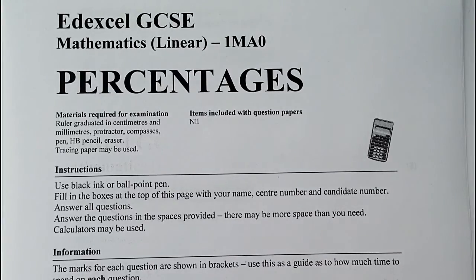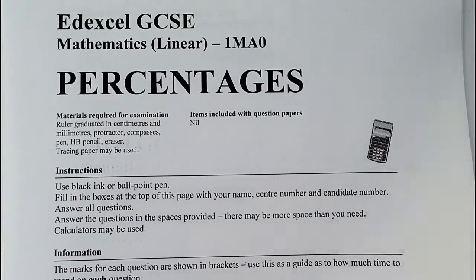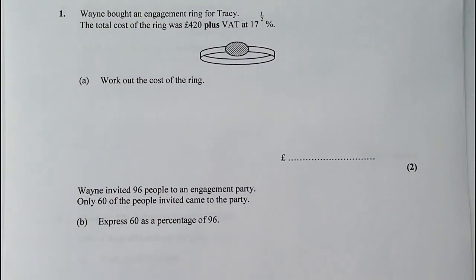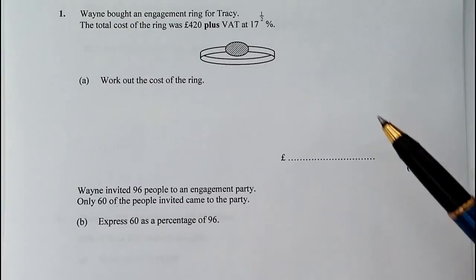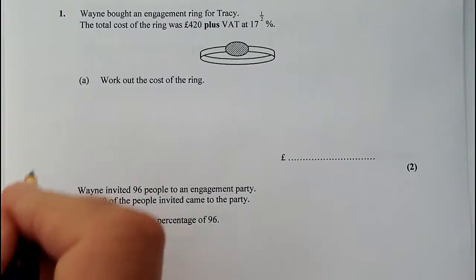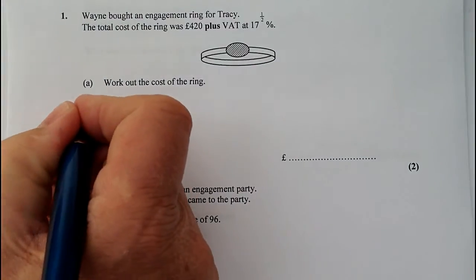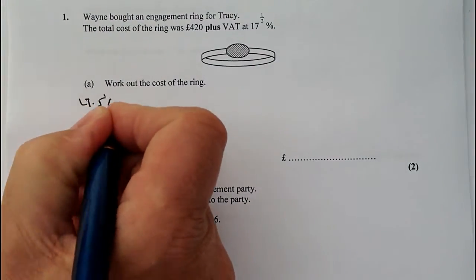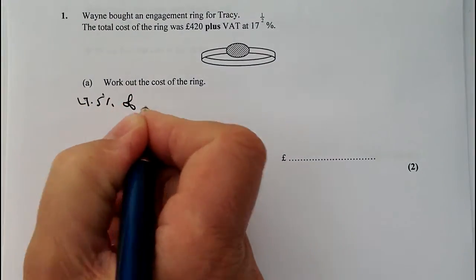So the first question — all of the questions kind of roughly follow the same sort of format — where you've got a price for something, in this particular case £420, plus VAT at 17.5%. So the way I would do it is I would work out 17.5% of £420.